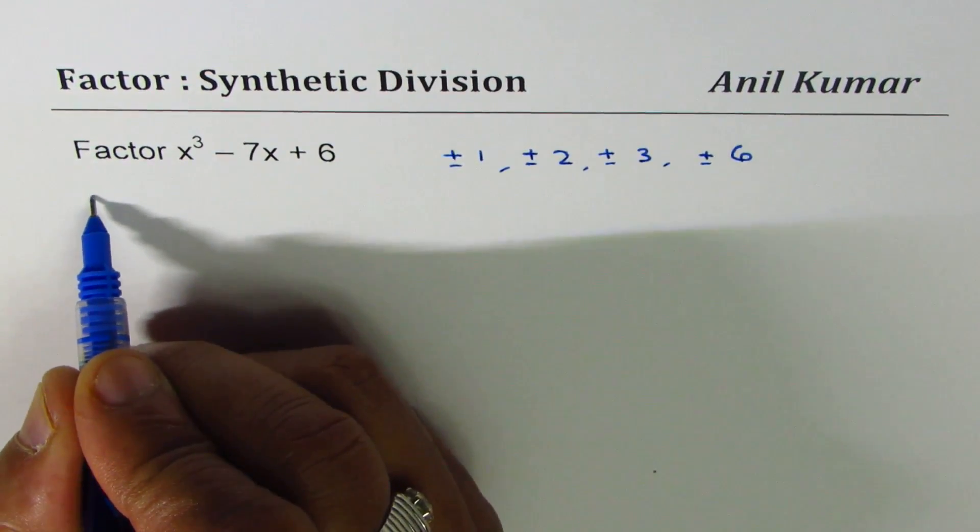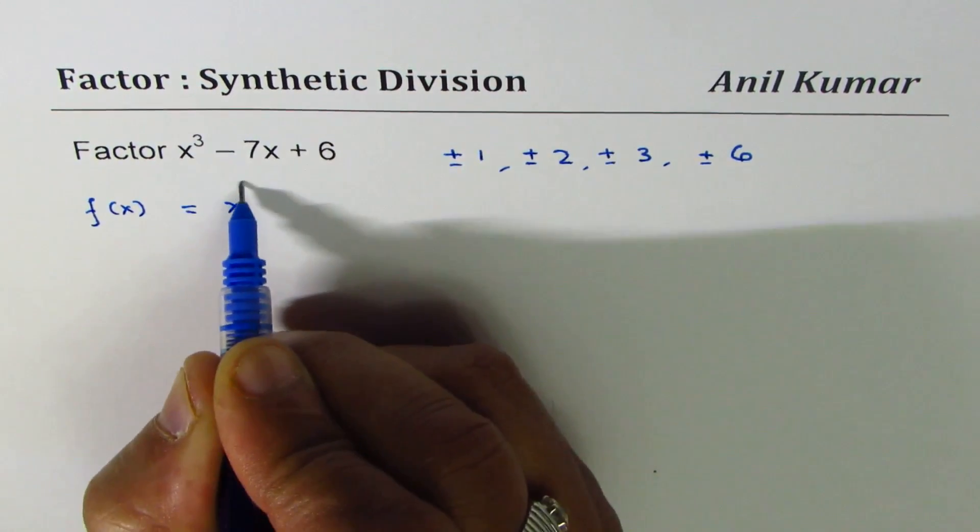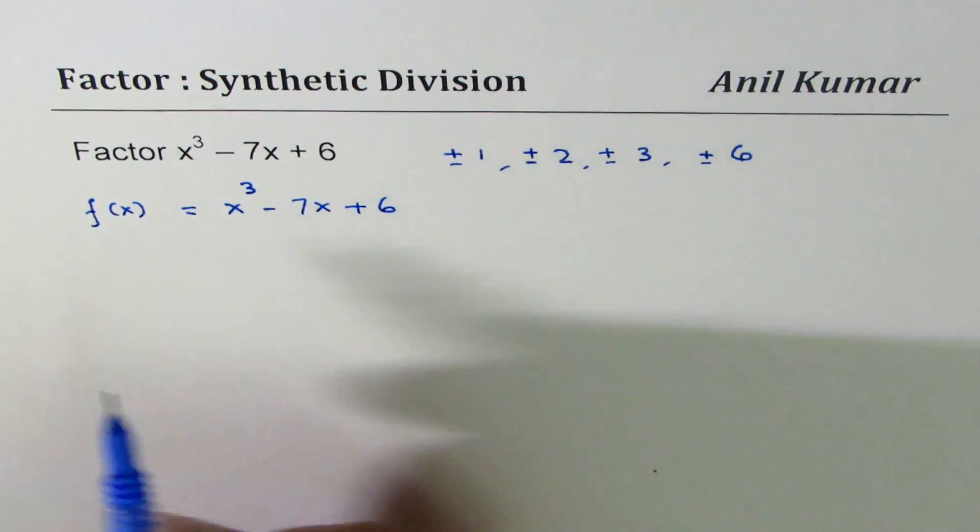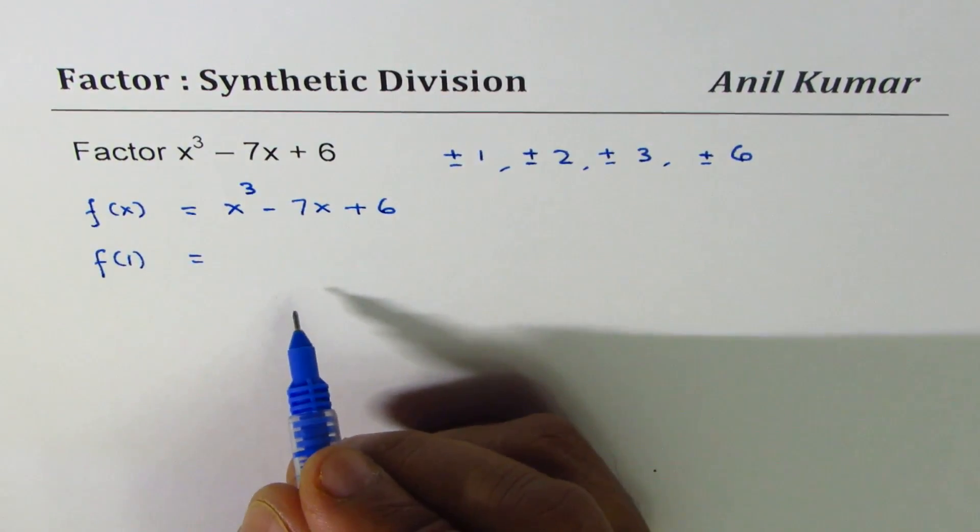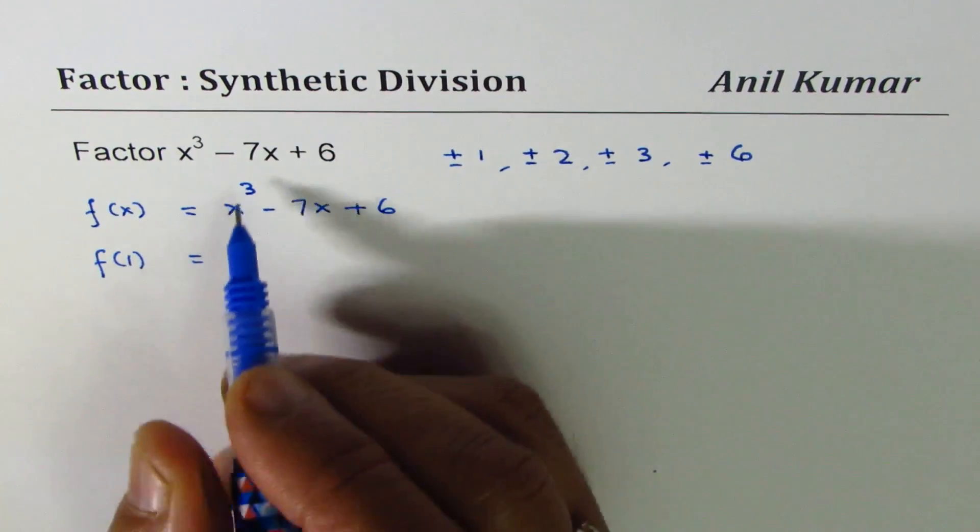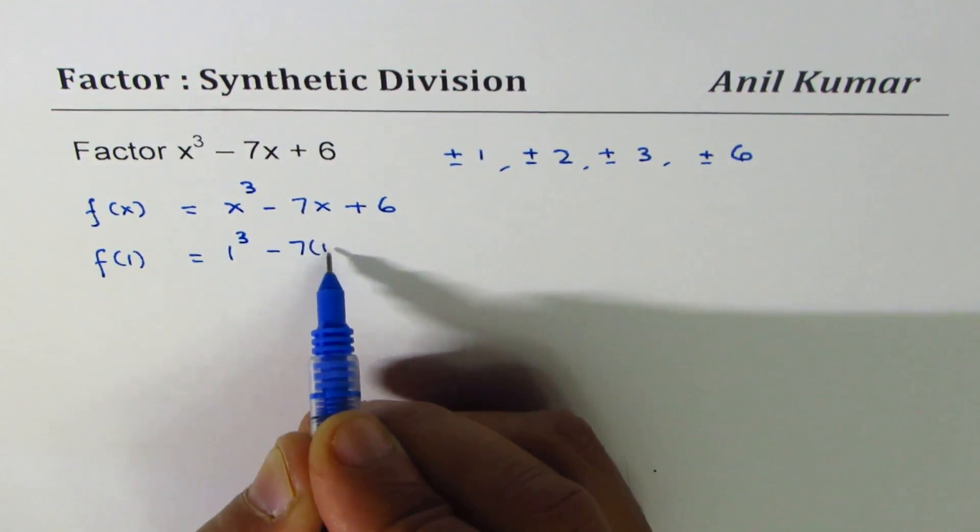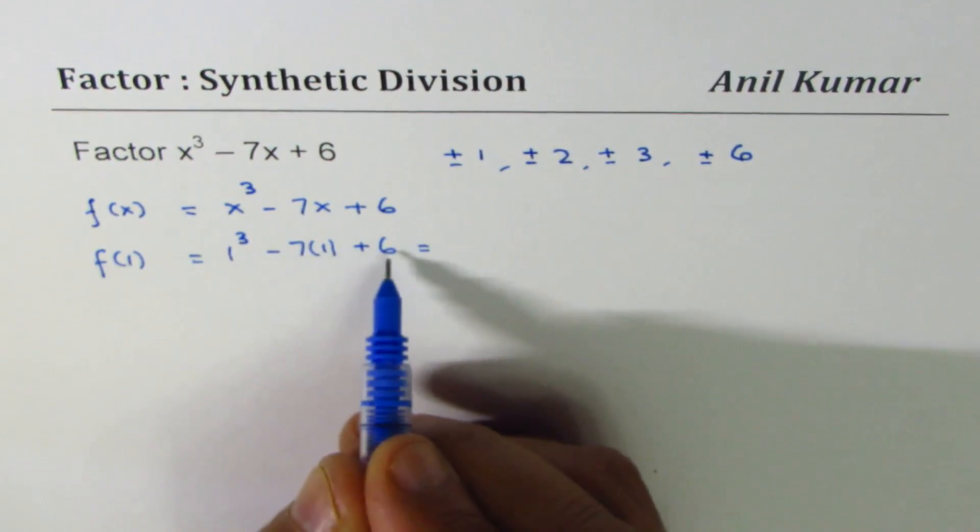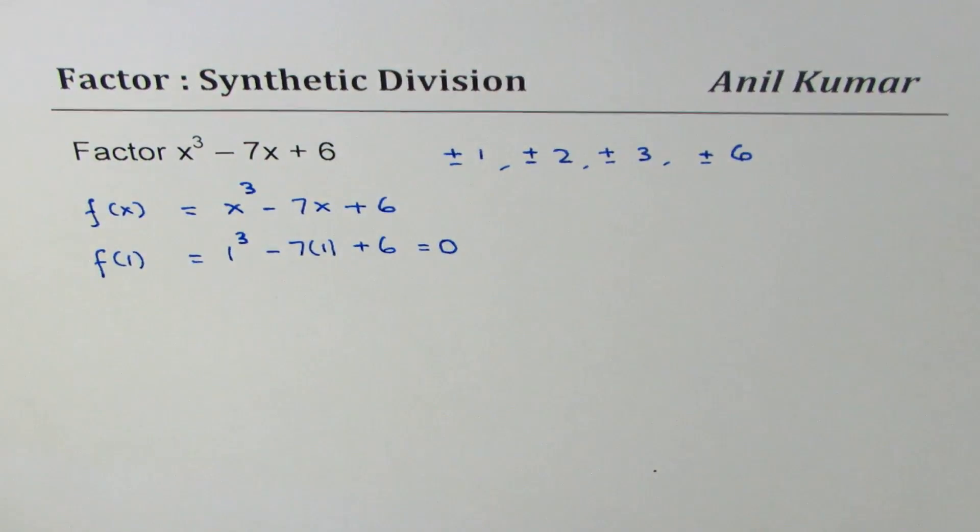Let's say the polynomial given to us is f(x) = x³ - 7x + 6. If I try 1, this is trial and error. At times you may have to try many values. So if I try 1, I get 1³ - 7(1) + 6, and that gives me 1 and 6 is 7. 7 - 7 = 0. That does give me 0.